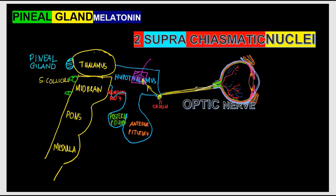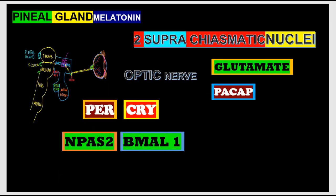The action potentials travel through the optic nerve, reach the optic chiasm, and then go into an important nucleus of the hypothalamus called the suprachiasmatic nucleus (SCN). There are two SCN — one on the left and one on the right. The tract from the retina to the SCN is called the retinohypothalamic tract. The SCN is the central biological clock of the body.